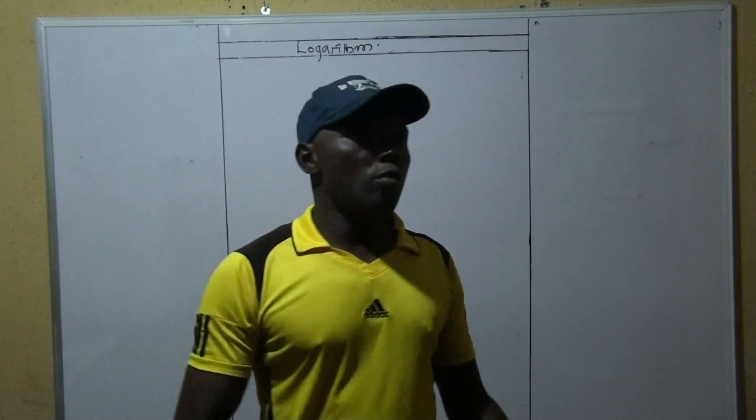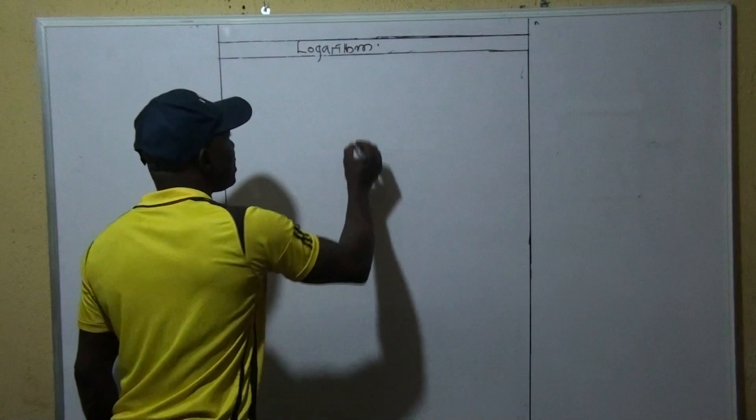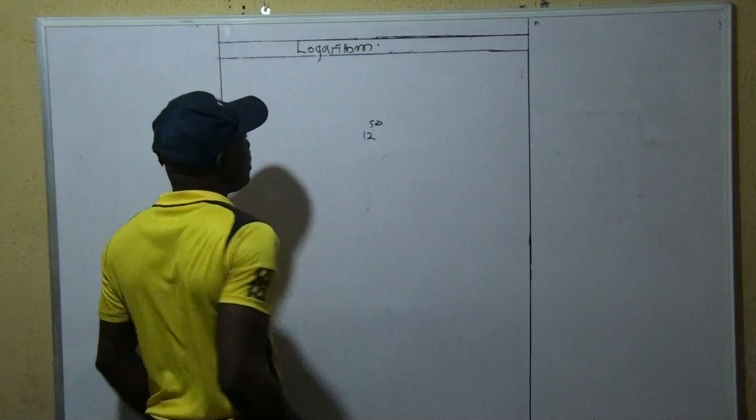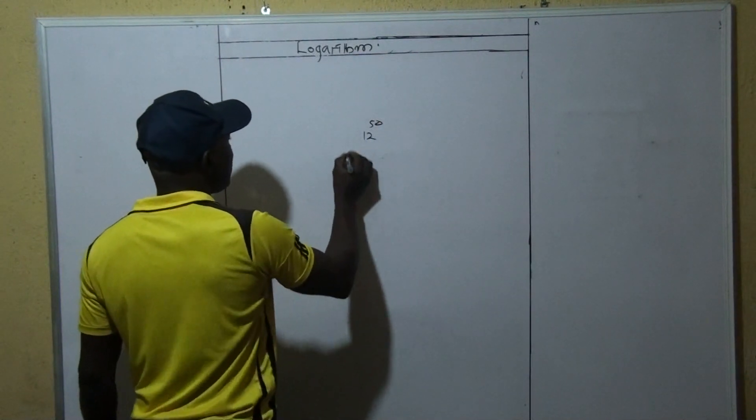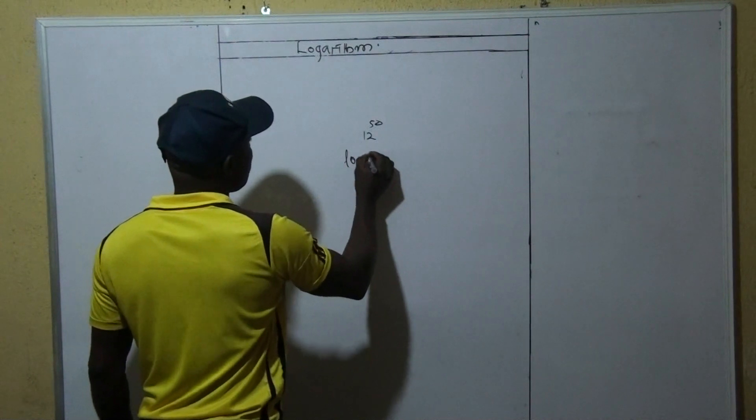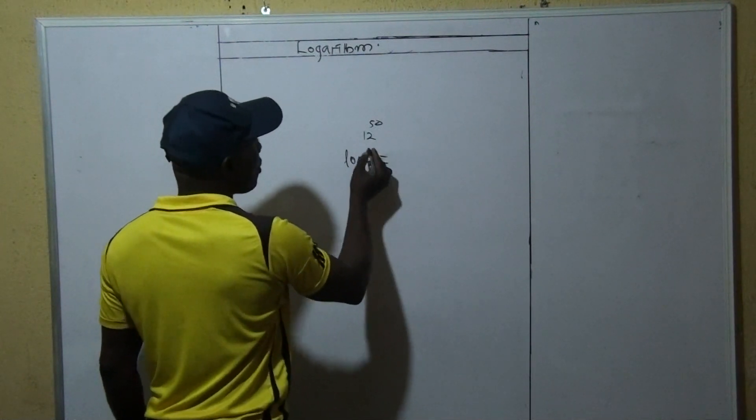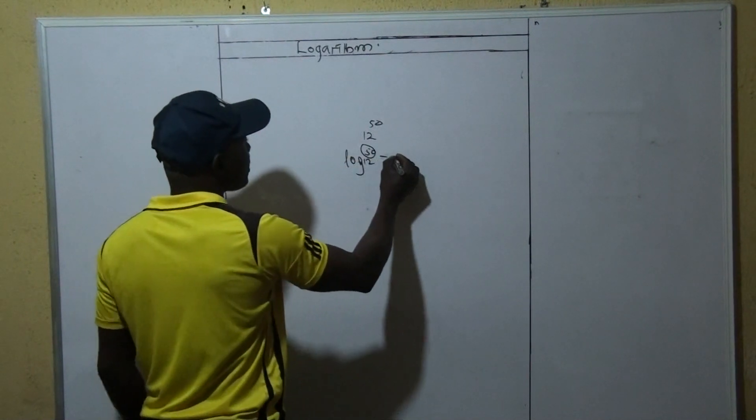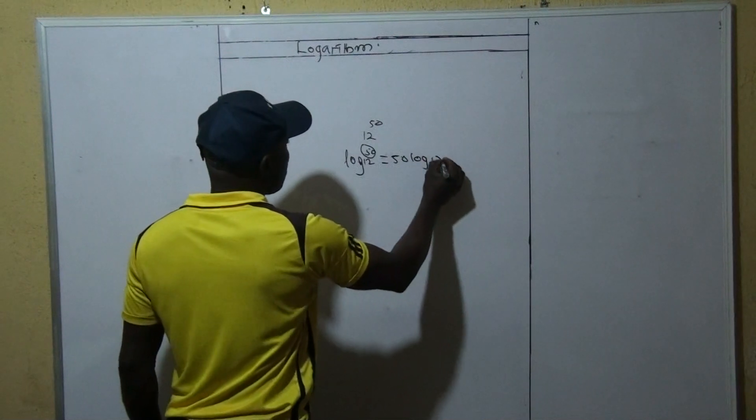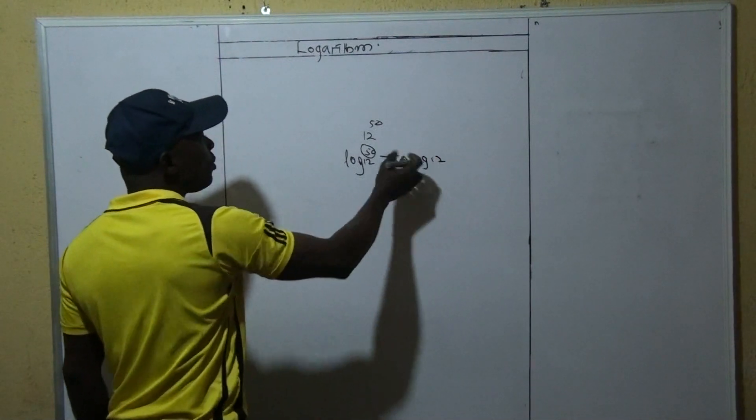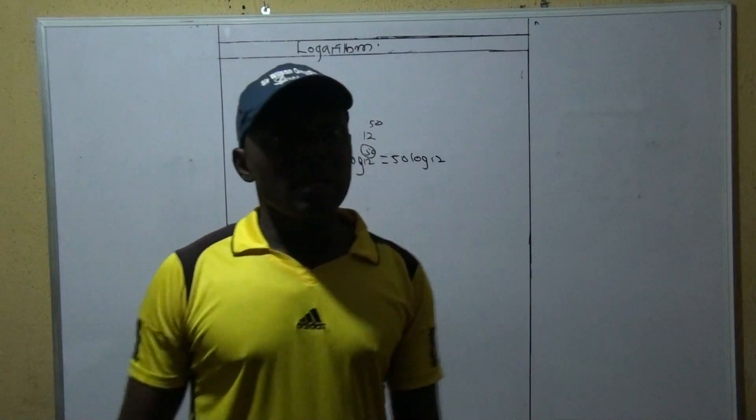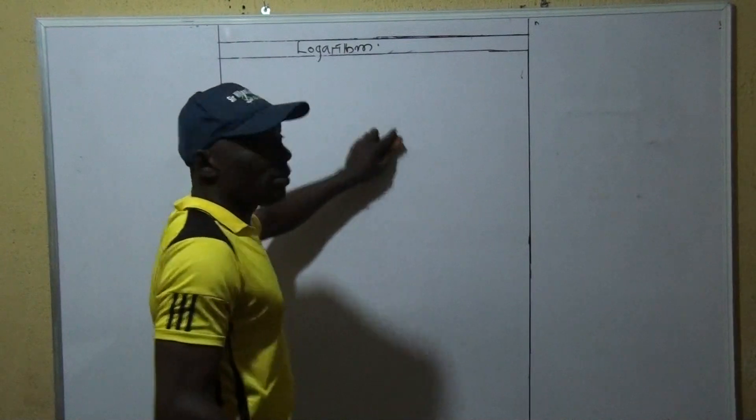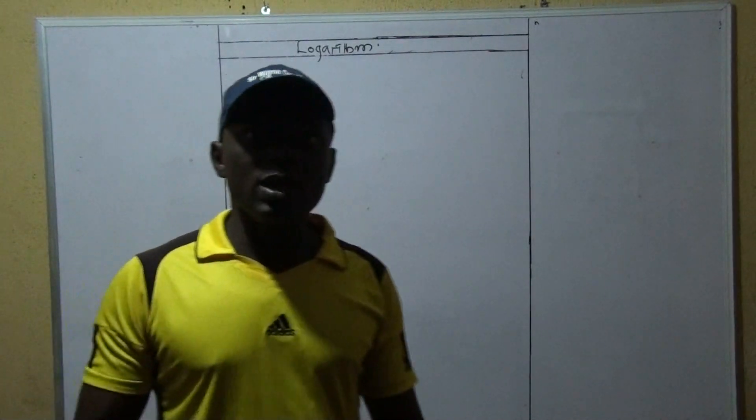Two, it also reduces the whole process of powers to mere multiplication. What I'm trying to say is this: if we have, for instance, 12 raised to 50, to find this is very difficult. But if you apply logarithm here, say log 12, from one of the laws I proved in our previous video class, immediately you obtain log 12, you multiply it and your answer is as good as it is.